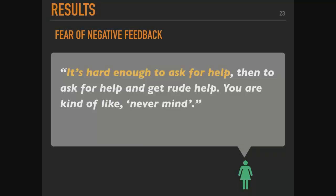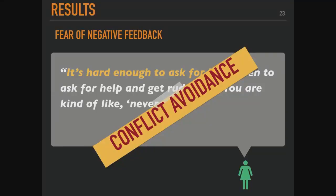The third barrier I'll cover is fear of negative feedback. One participant said: 'It's hard enough to ask for help, but to ask for help and get rude help is kind of like — nevermind.' It's disengagement. I branded this as conflict avoidance, though that term doesn't quite capture it — it's really just being unlikely to engage when met with toxic or hostile behavior.